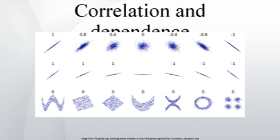Rank Correlation Coefficients. Rank correlation coefficients, such as Spearman's rank correlation coefficient and Kendall's rank correlation coefficient τ, measure the extent to which, as one variable increases, the other variable tends to increase, without requiring that increase to be represented by a linear relationship. If as one variable increases the other decreases, the rank correlation coefficients will be negative. It is common to regard these rank correlation coefficients as alternatives to Pearson's coefficient, used either to reduce the amount of calculation or to make the coefficient less sensitive to non-normality in distributions.